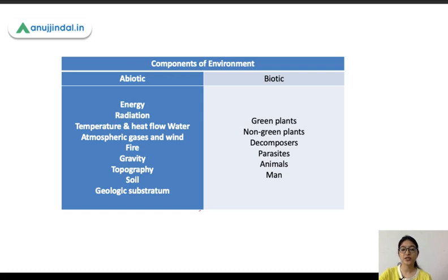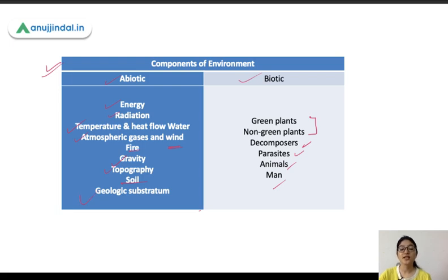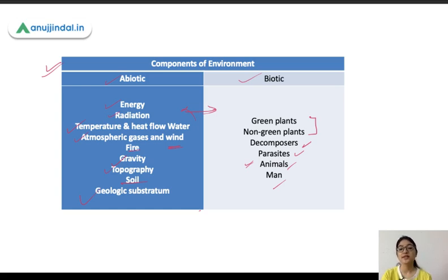Biotic components include green plants and non-green plants, as well as living organisms like decomposers, parasites, animals, and humans. Abiotic components include energy, radiation, temperature, atmospheric gases, wind, fire, gravity, topography, relief, soil, and geologic substratum. Ecology studies the interaction between these living organisms with both the biotic and abiotic components of their environment.